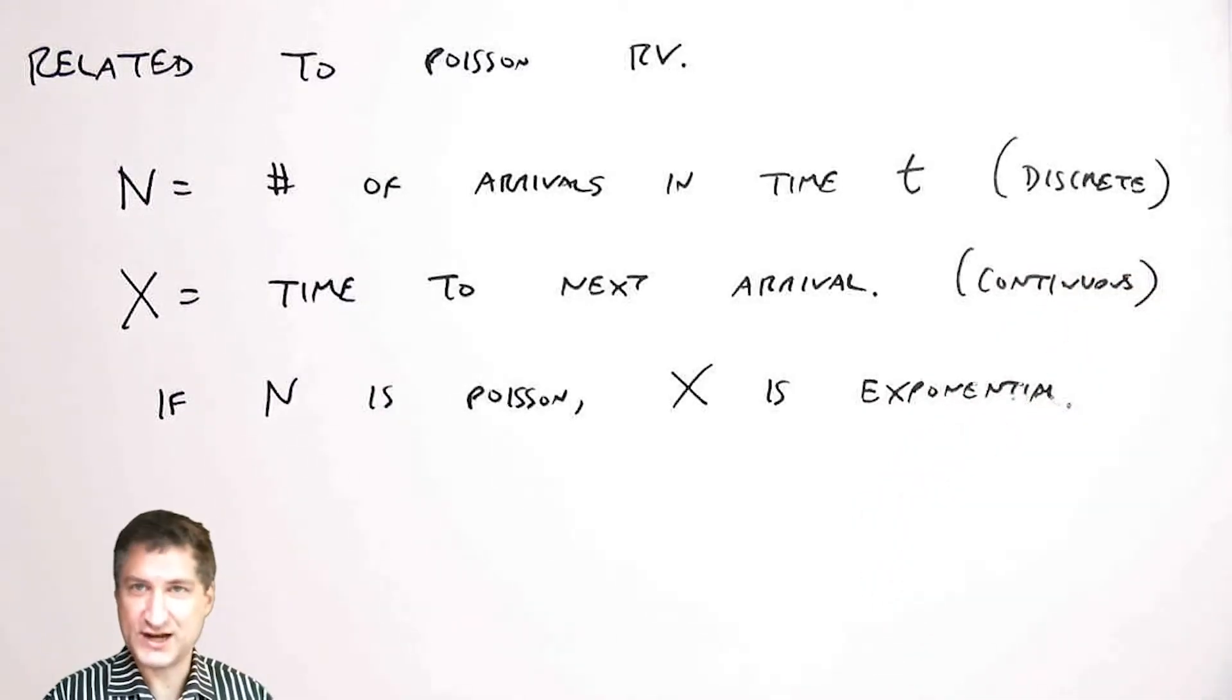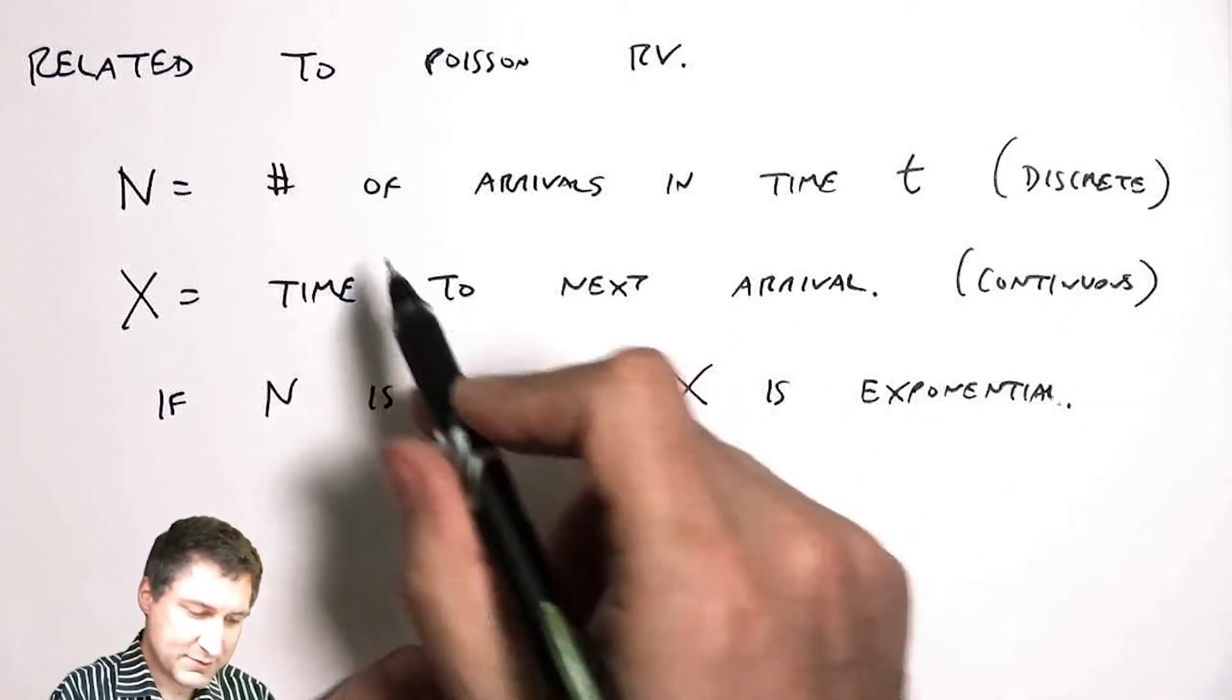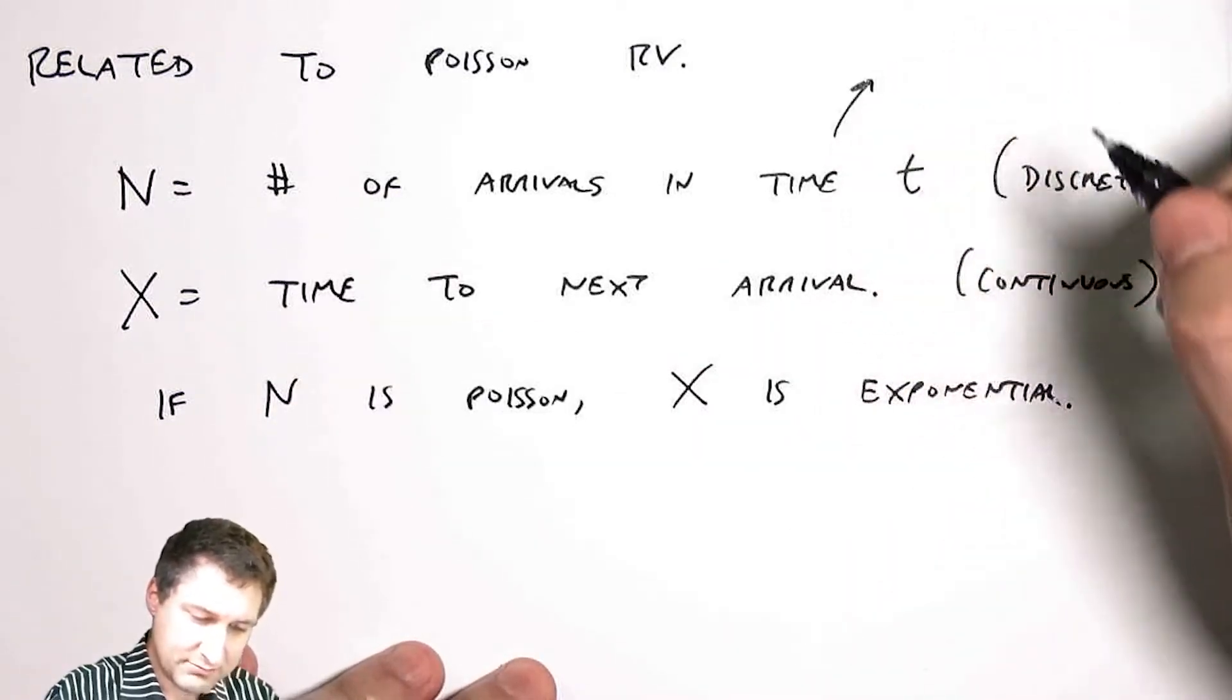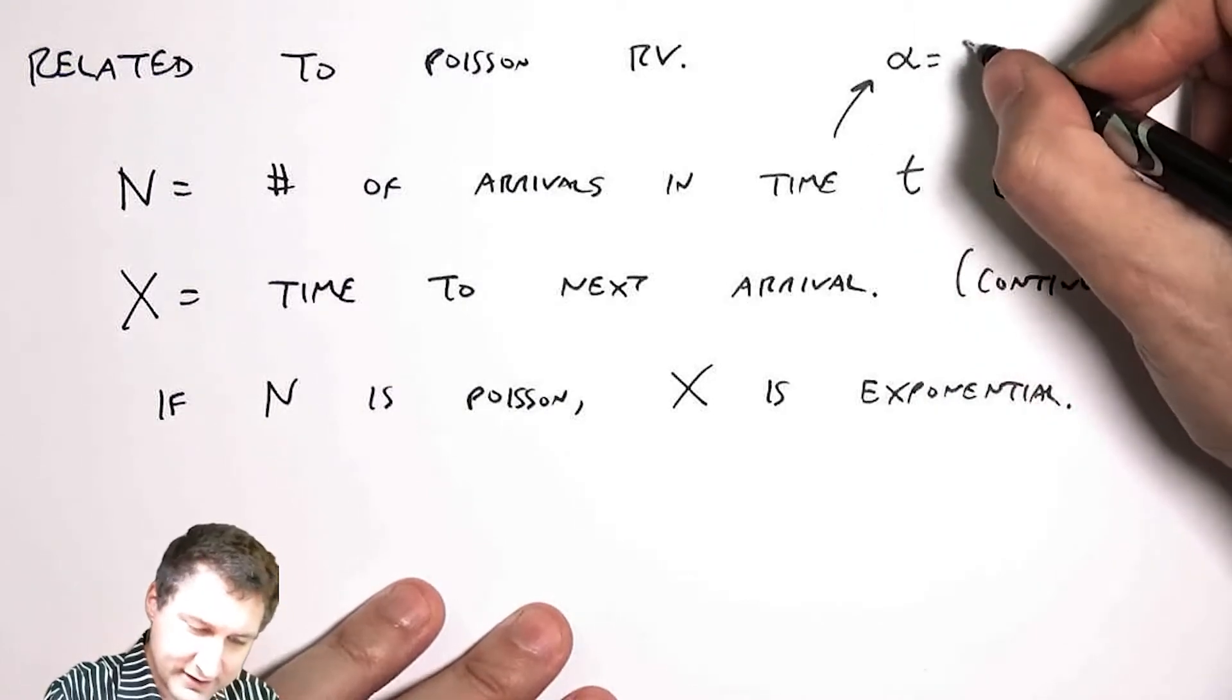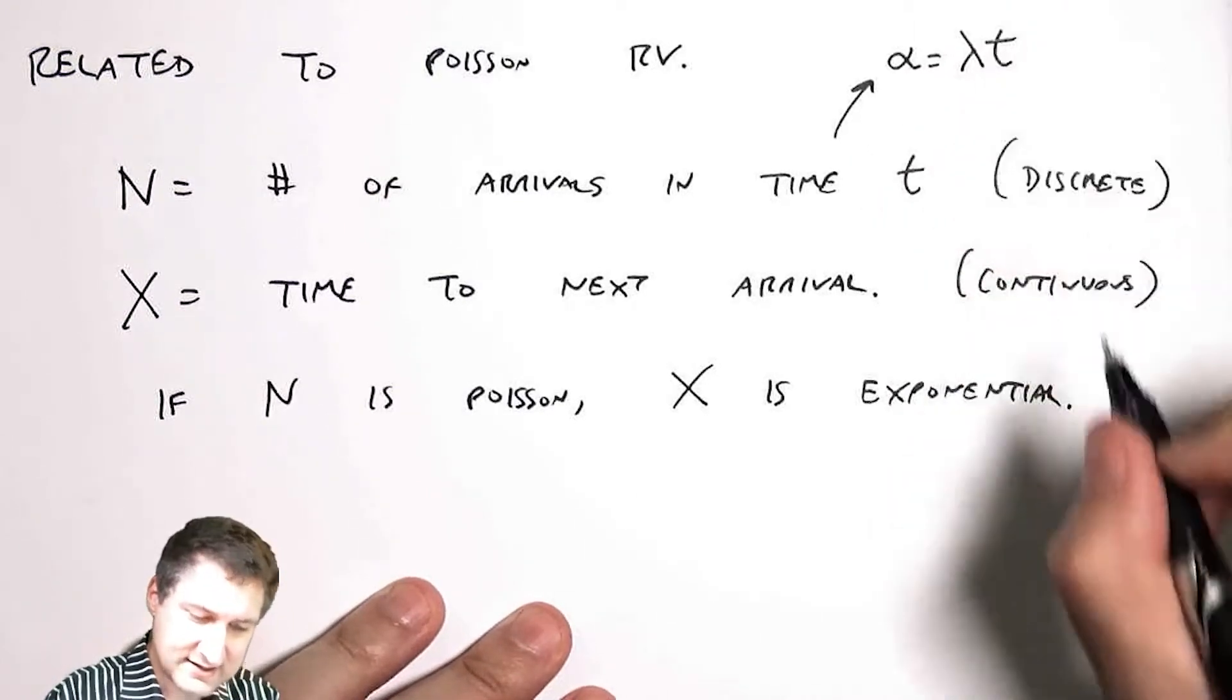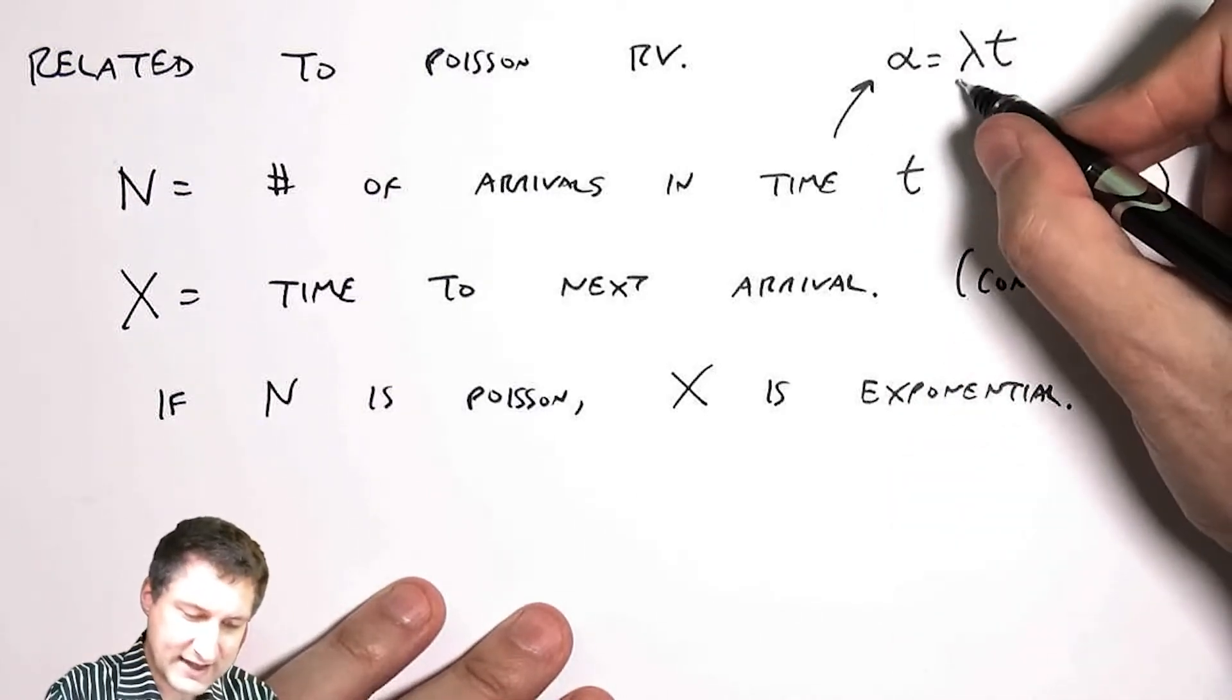The idea is that if N is Poisson, then X is exponential. Let's show why that's true. Suppose that this Poisson random variable has the parameter alpha, which I'm going to define as lambda t.